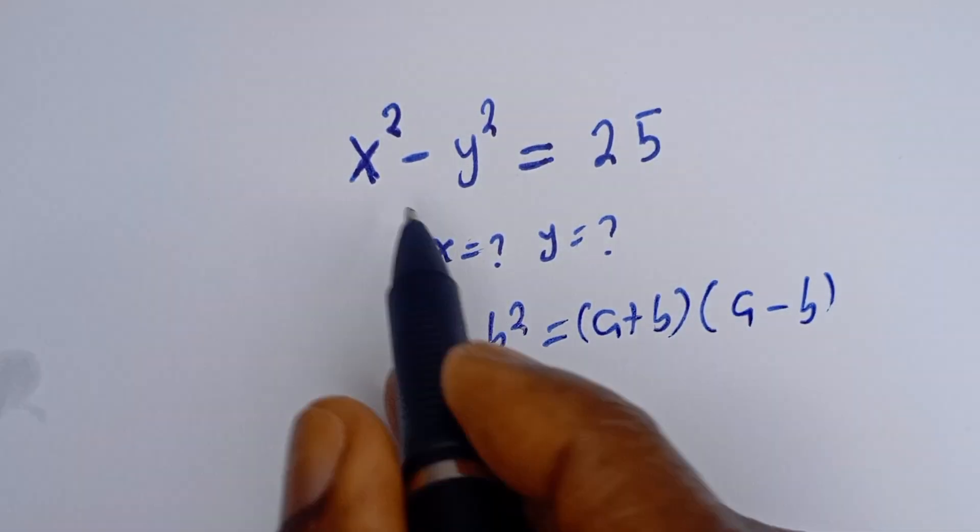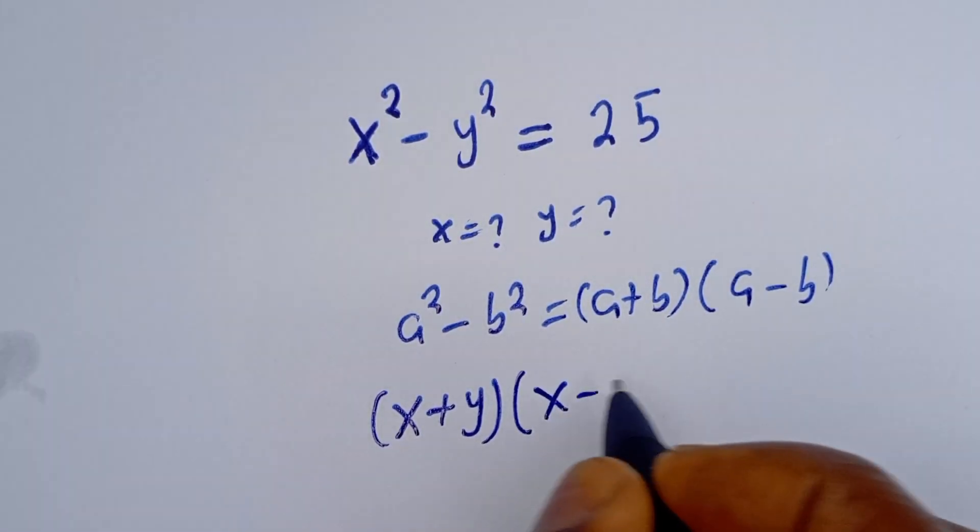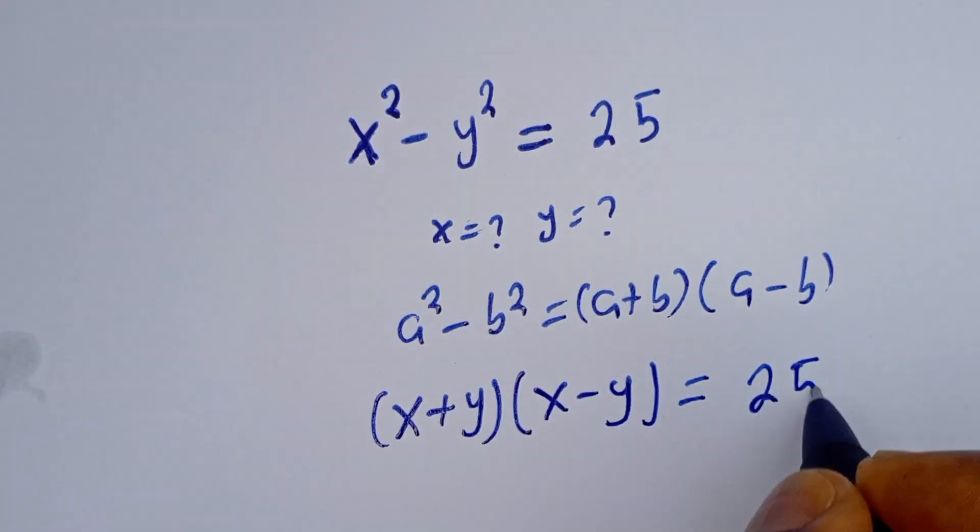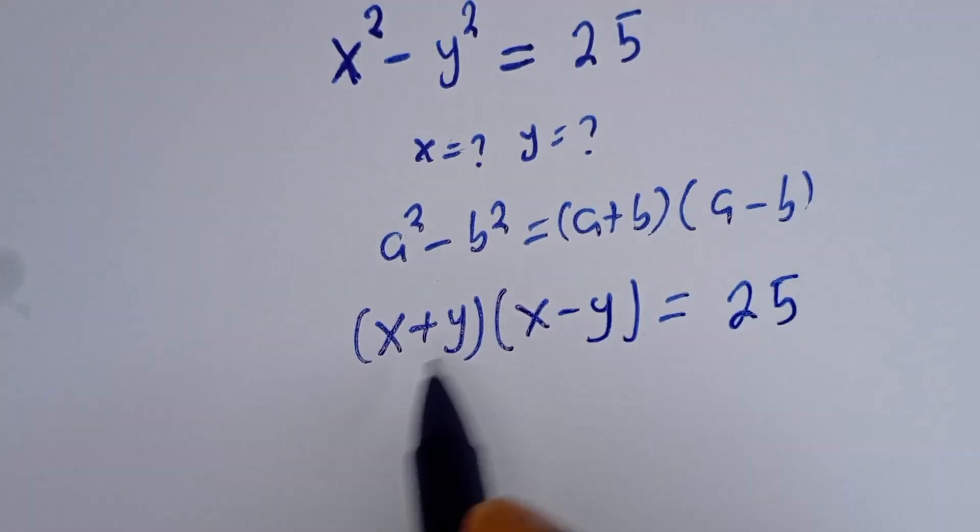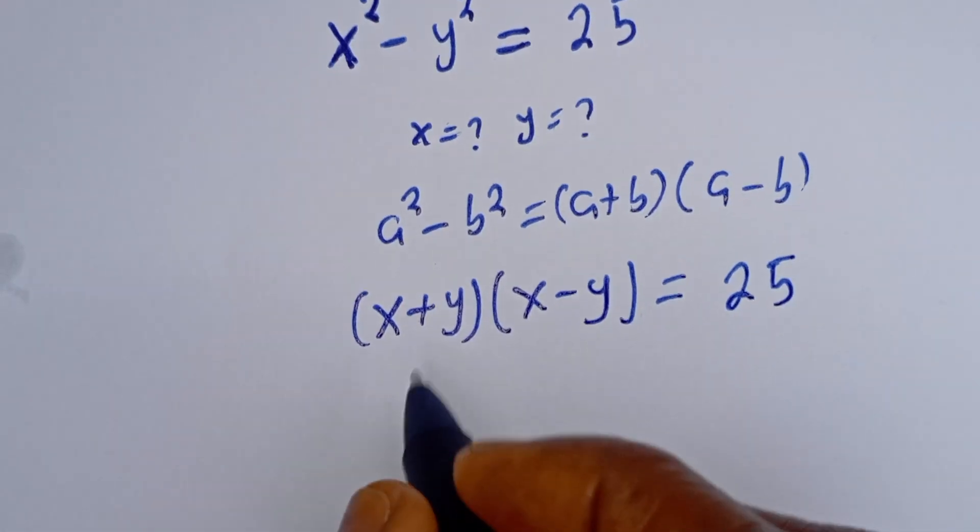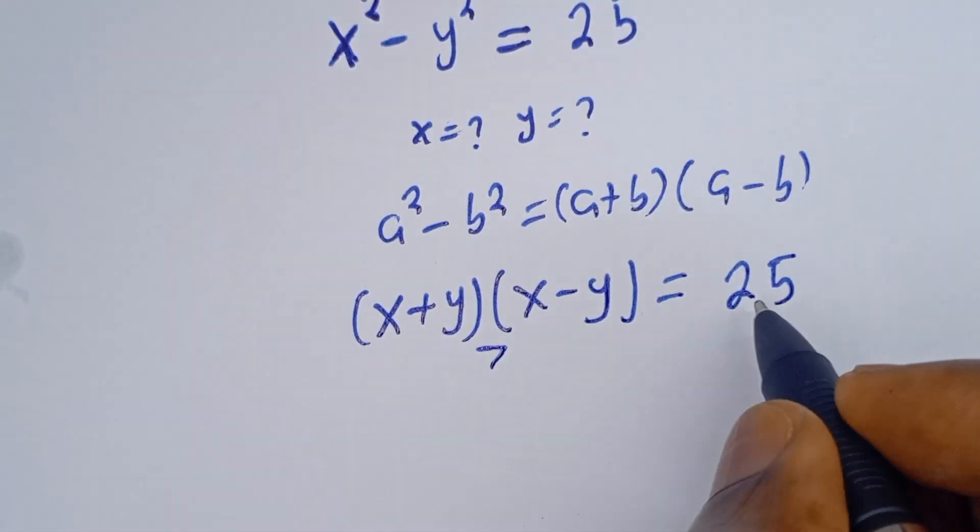Then this can be written as X plus Y times X minus Y equals 25. Now if you look at this, X plus Y is greater than X minus Y. Then we want to look at the factors of 25.